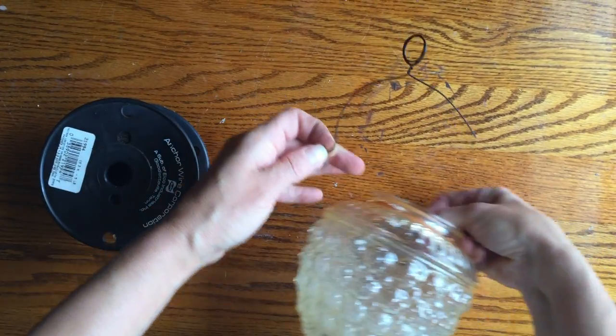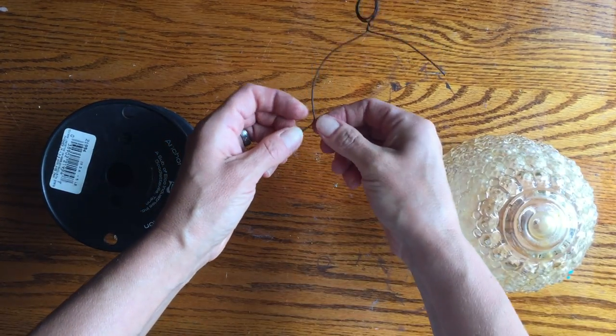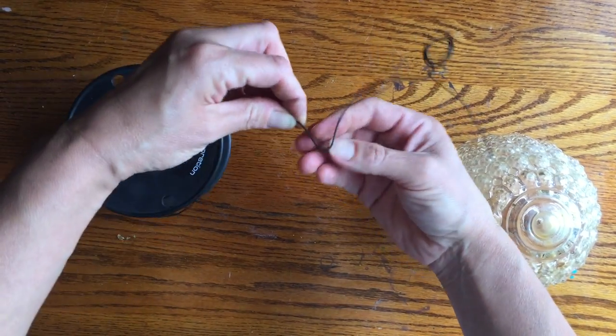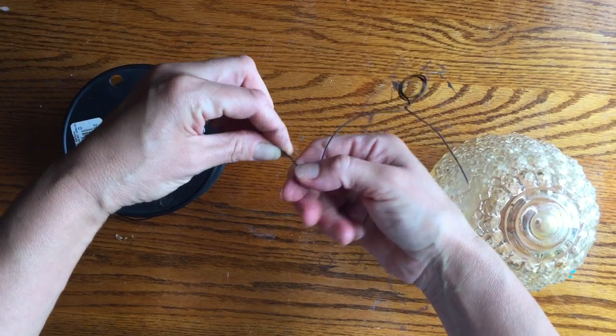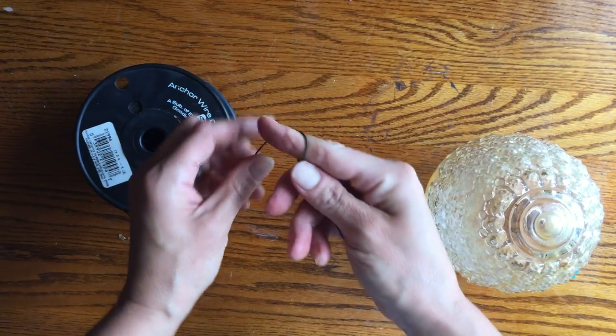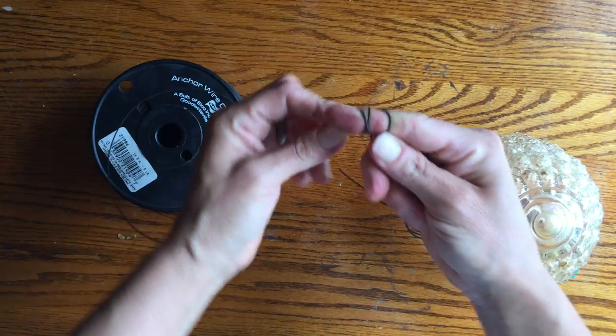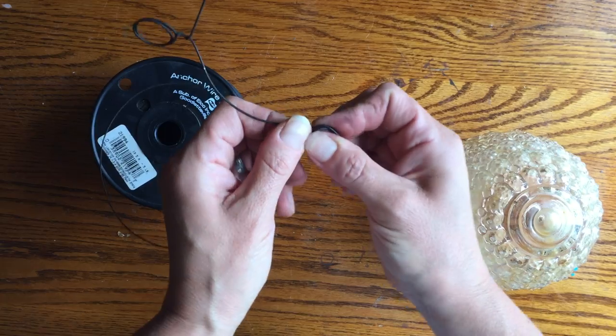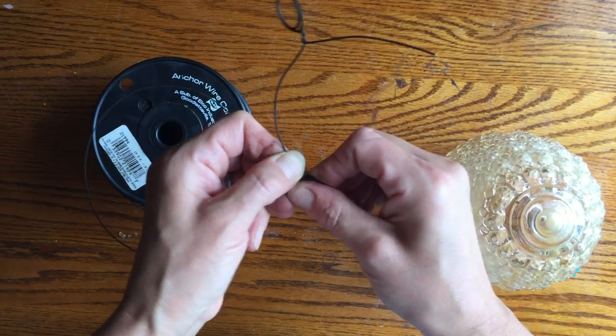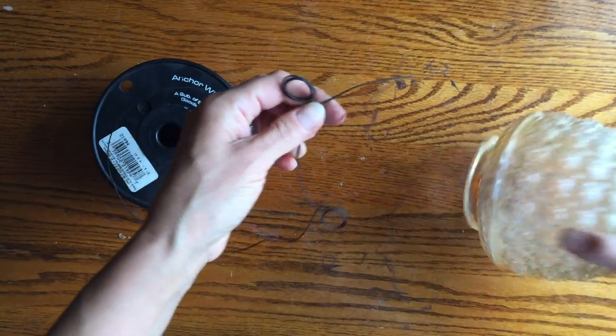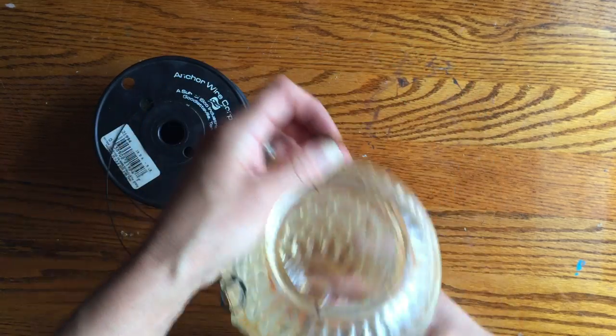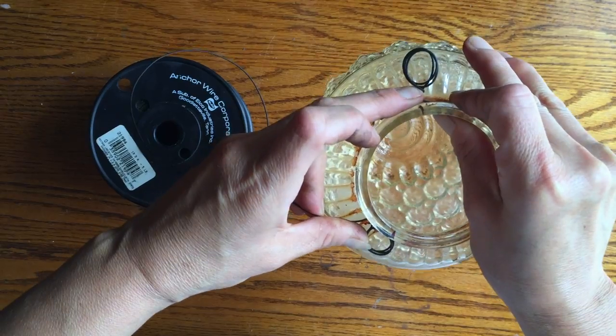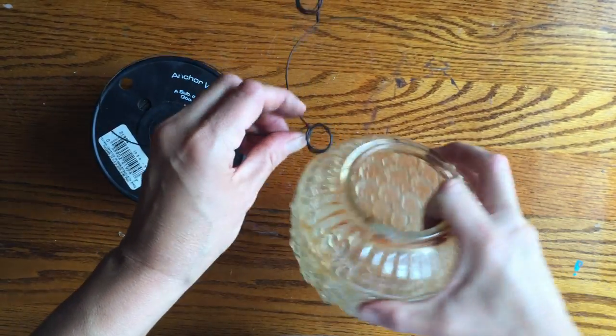That one, one, two, three. That one crossed over but that's okay. I'm going to twist it. There's two. I'm going to set it on there and see how I'm doing. Yeah, let's spread out a little bit.